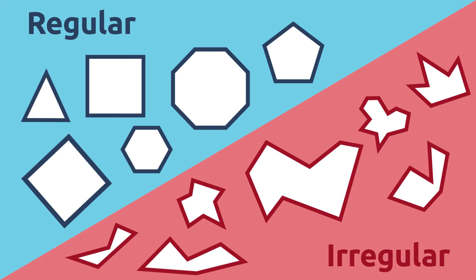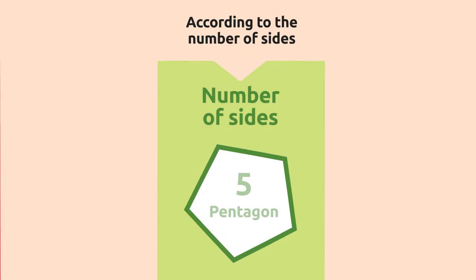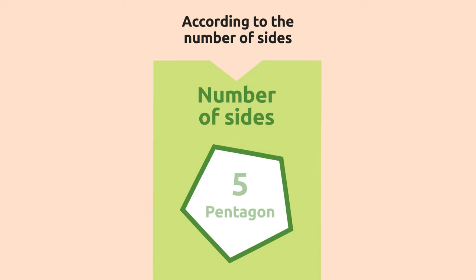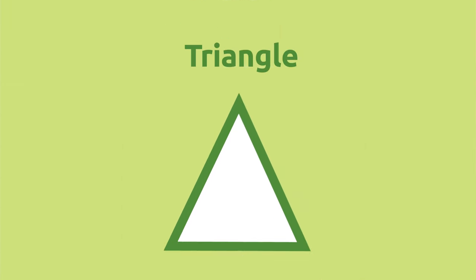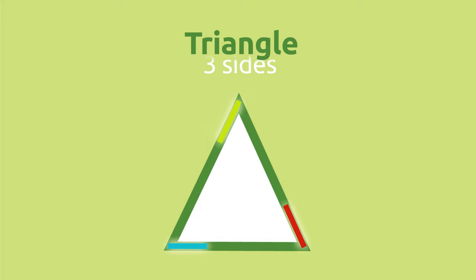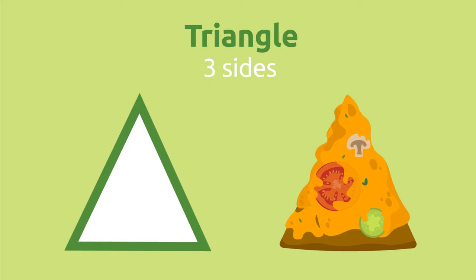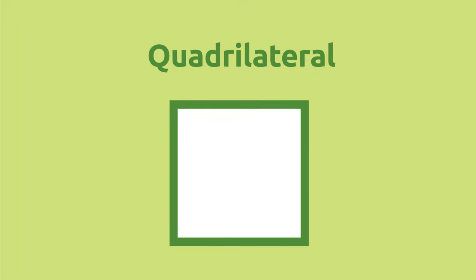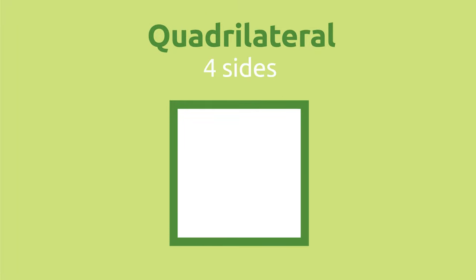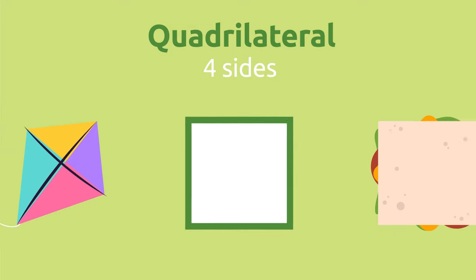Polygons can also be classified depending on the number of their sides. Triangles are those polygons that have three sides. This slice of pizza has a triangular shape. Quadrilaterals have four sides. This sandwich or this kite are quadrilaterals.